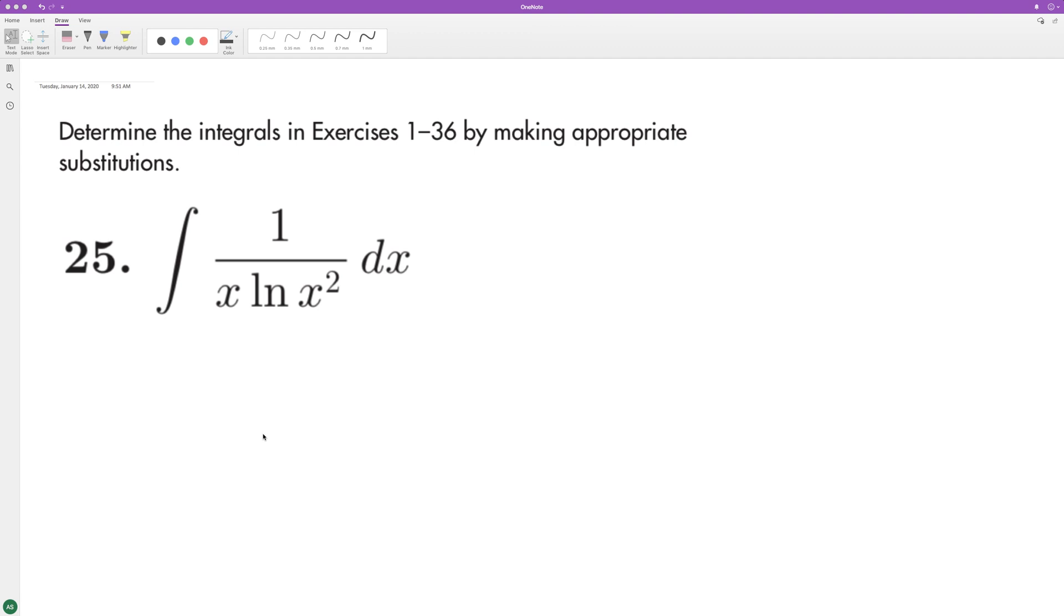For this problem, we'll use substitution. We can set u equal to natural log of x squared. So du in this instance will be equal to 2 over x